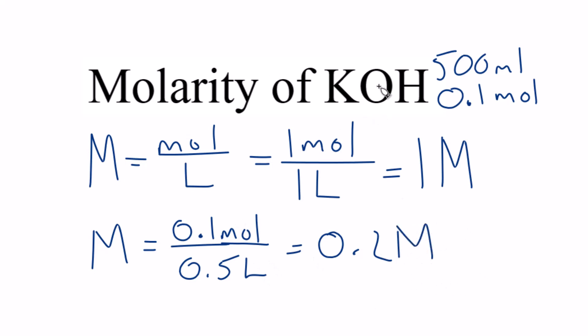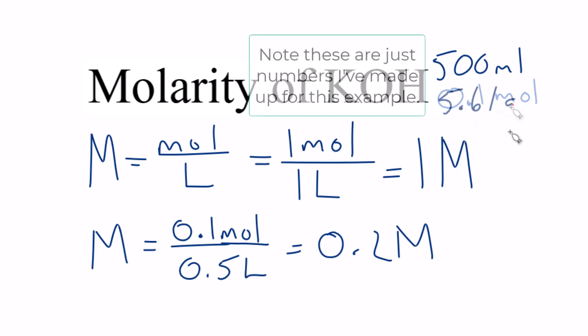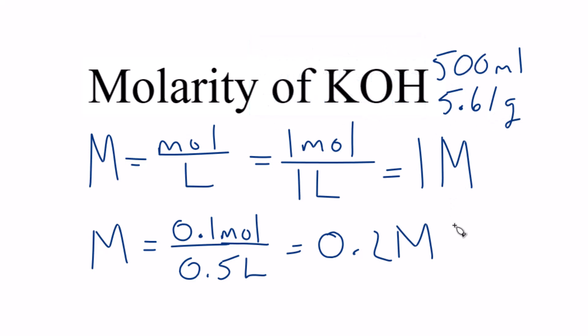So we've figured out the molarity of the KOH solution given this information, which I just made up for this example. Sometimes though, you're not given moles, you're given grams, say 5.61 grams of KOH and 500 milliliters, and you need to figure the molarity out for the KOH solution. Here's how you do that.